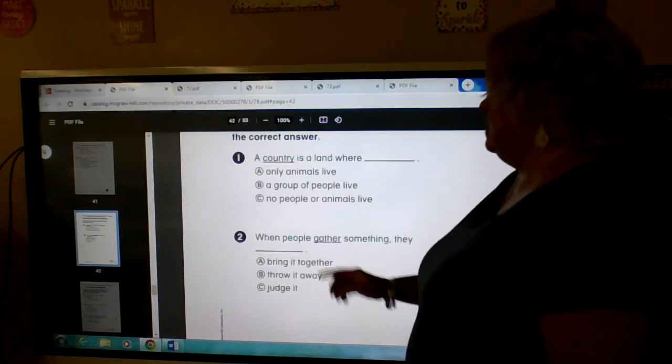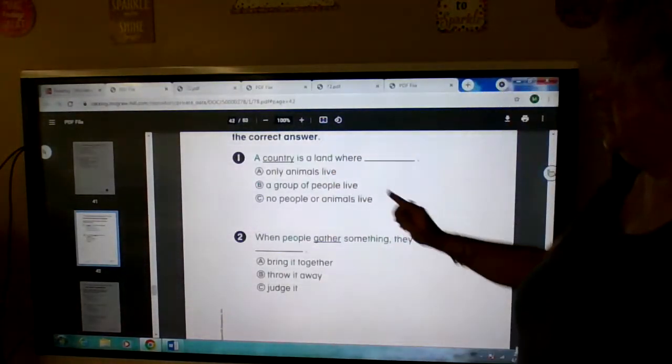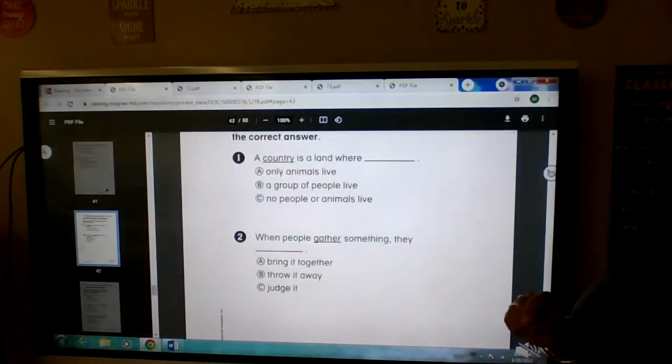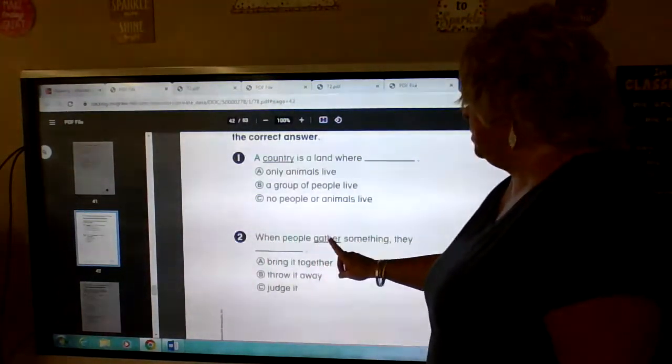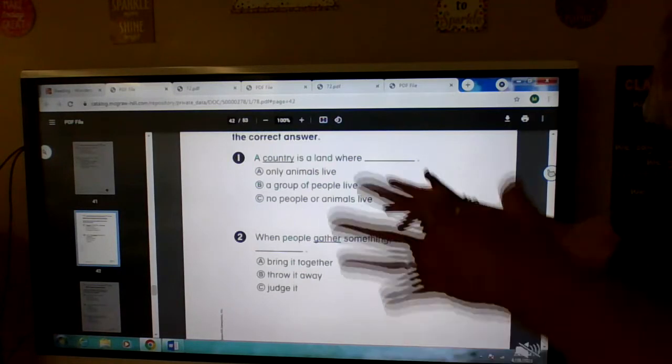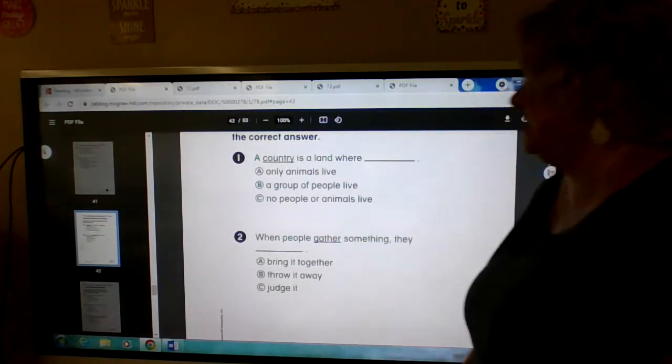Okay, number one. A country is a land where A, B, or C. Number two, when people gather something, they A, B, or C.